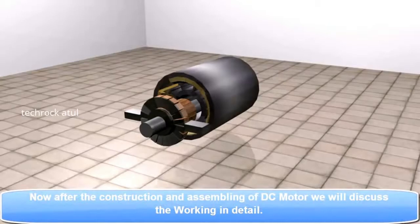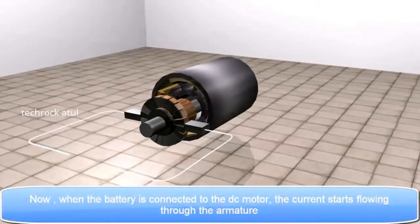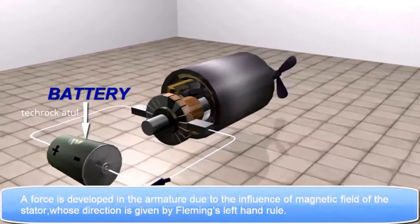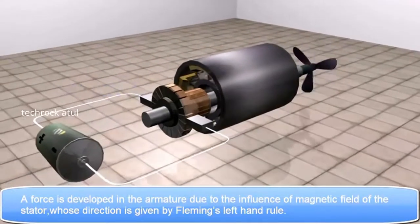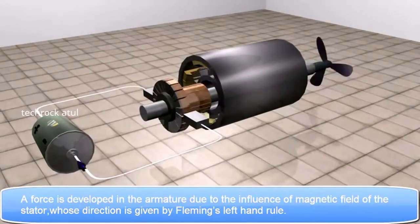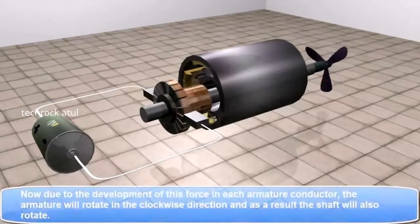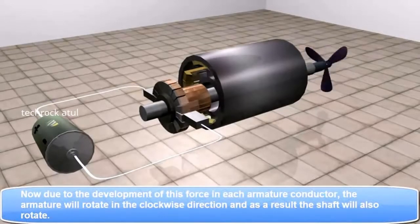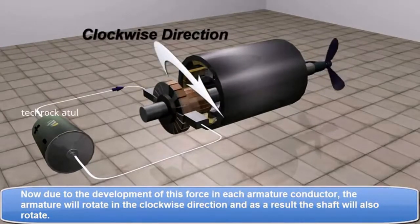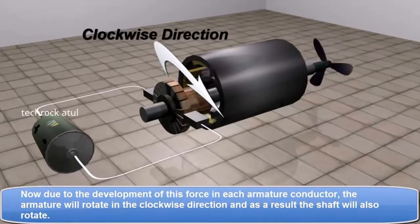Now, after the construction and assembling of DC motor, we will discuss the working in detail. When the battery is connected to the DC motor, the current starts flowing through the armature. A force is developed in the armature due to the influence of magnetic field of the stator, whose direction is given by Fleming's left-hand rule. Now, due to the development of this force in each armature conductor, the armature will rotate in the clockwise direction, and as a result, the shaft will also rotate.